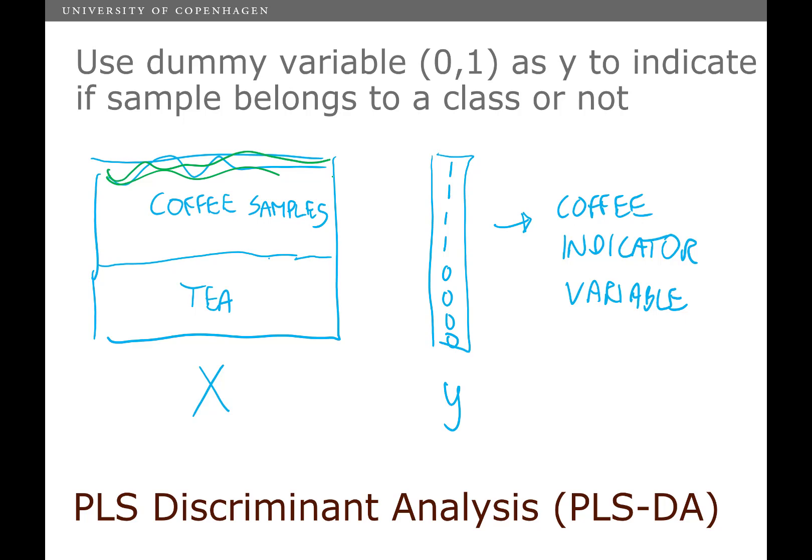So if I get something close to one, then it means it's a coffee sample. And if I get something close to zero, it must be a tea sample. And that's what we call PLSDA, PLS Discriminant Analysis.